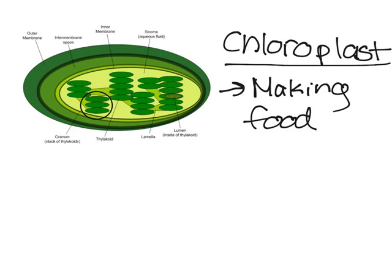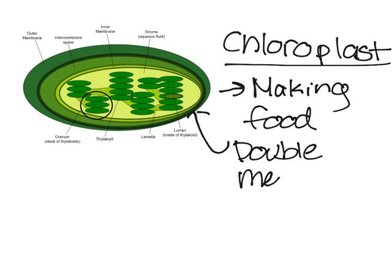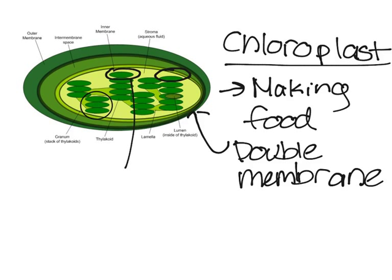First we'll discuss the structure of chloroplasts. The outside, that membrane, is a double membrane, which means it has two plasma membranes that surround the chloroplast. These little pancake-looking things right there are called thylakoids.